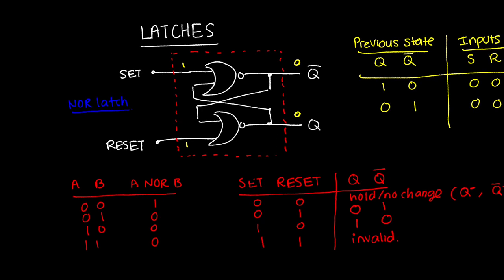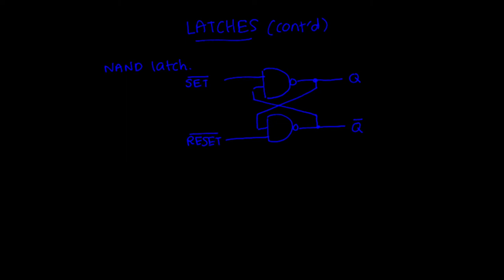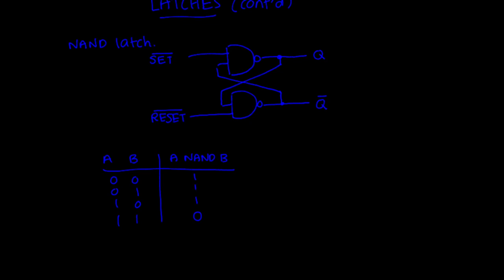Now let's look at the NAND latch. The NAND latch is constructed exactly the same way as the NOR latch, except with two NAND gates. I have the same Q and Q-bar outputs with the same feedback configuration. I have two control inputs — still called set and reset — but now they'll have a bar over them. The key thing to recall about the NAND gate: the output is only low if both inputs are high.